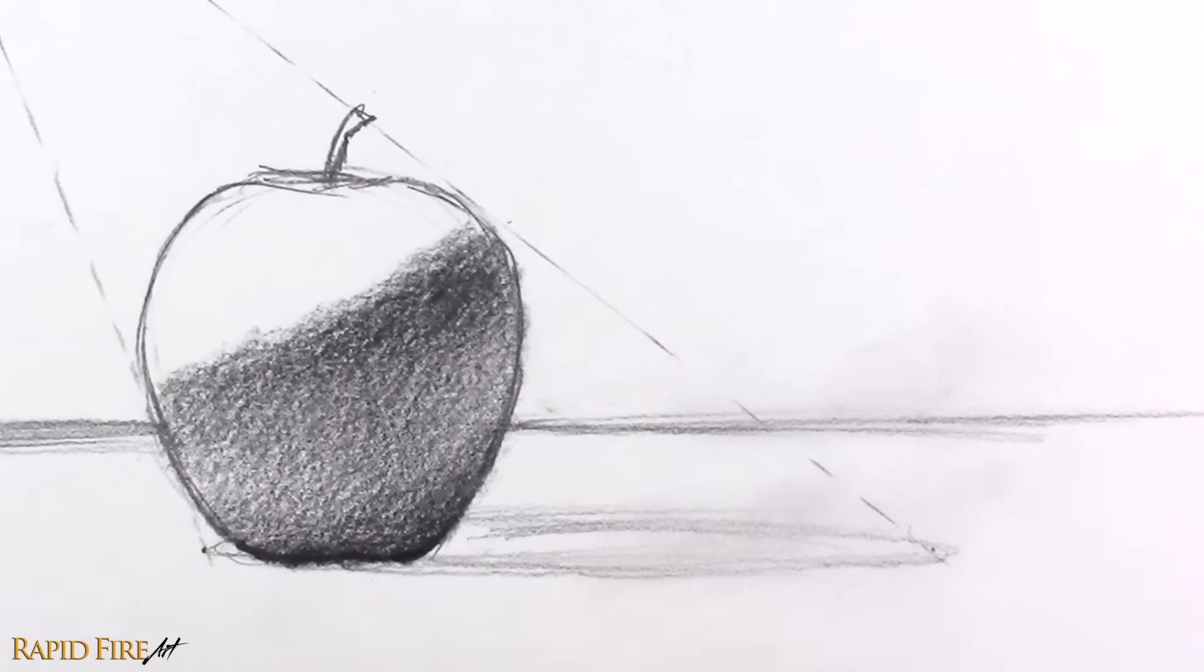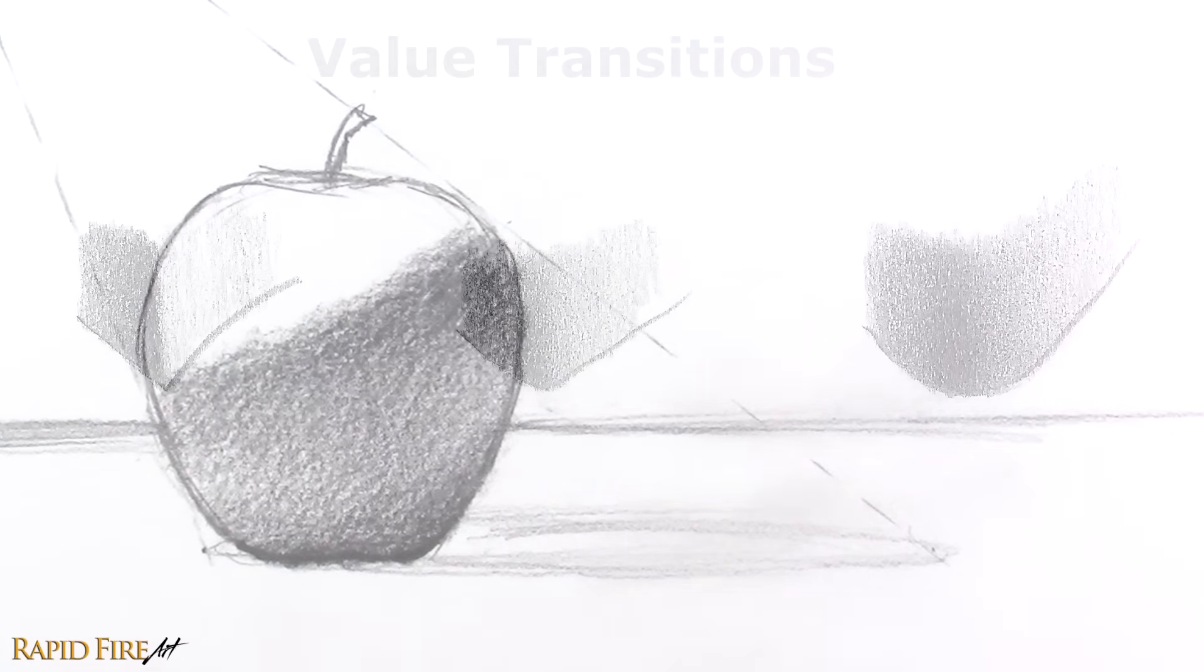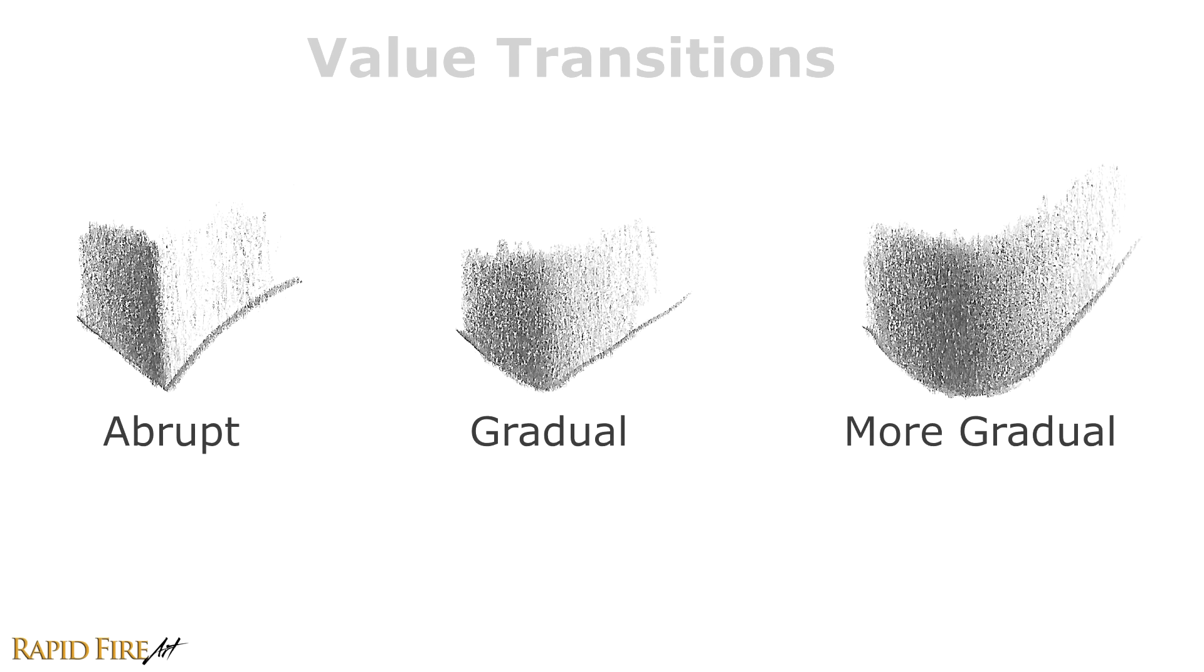If you're shading an object with a matte surface, an abrupt or immediate transition can indicate a sharp edge, while a gradual transition can indicate a round edge.